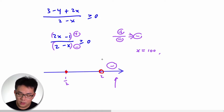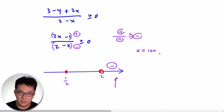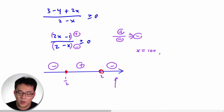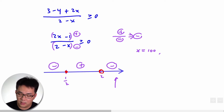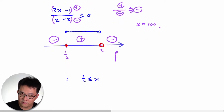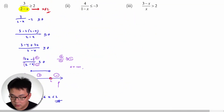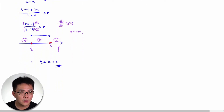With the test point method, whenever you cross a root — which are x = 2 and x = 1/2 — you just alternate the sign. It's binary: plus, minus, plus, minus. So if the rightmost region is negative, the middle region (between 1/2 and 2) is positive, and the left region is negative. Since we want the expression to be positive (≥ 0), the answer is 1/2 ≤ x < 2.